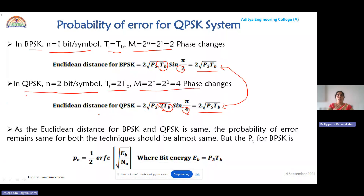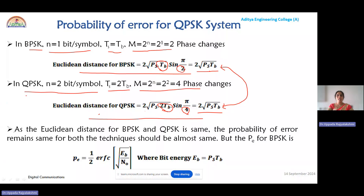Since the probability of error is inversely proportional to Euclidean distance — as Euclidean distance increases, probability of error reduces — and for both BPSK and QPSK the Euclidean distance is equal, the probability of error remains the same for both techniques. For BPSK, the probability of error was calculated as half ERFC of √(Eb/N₀), where Eb is the bit energy equal to Ps · Tb.